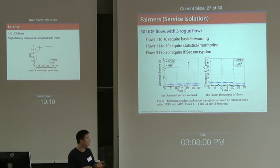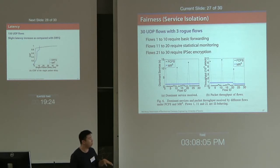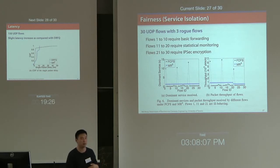Using a naive first-come-first-served scheduling algorithm, the three rogue flows grab an arbitrary share of middlebox resources and the resources allocated to the other flows are negligible. But applying our algorithm, almost all traffic flows receive roughly the same middlebox resources.